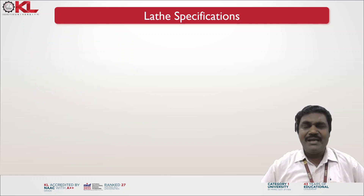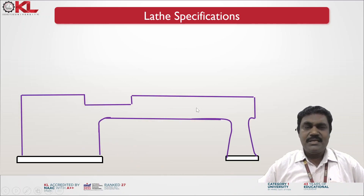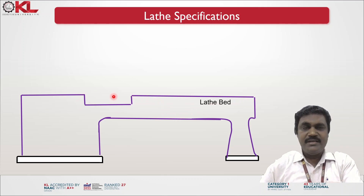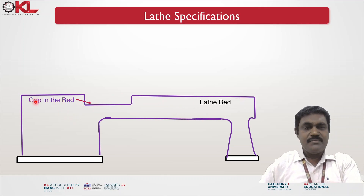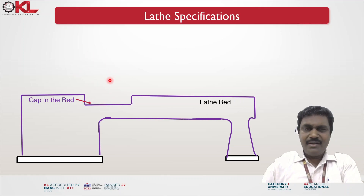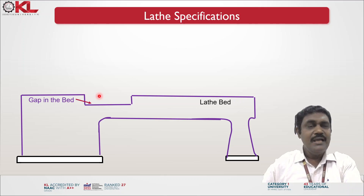Now let us see some of the parameters with the help of a diagram. This is the lathe machine and this is the lathe bed. On the top of the lathe bed on the left side, near the headstock, a gap is provided that we call the gap in the bed. This gap is provided so that all chips fall and are collected there for easy job handling.